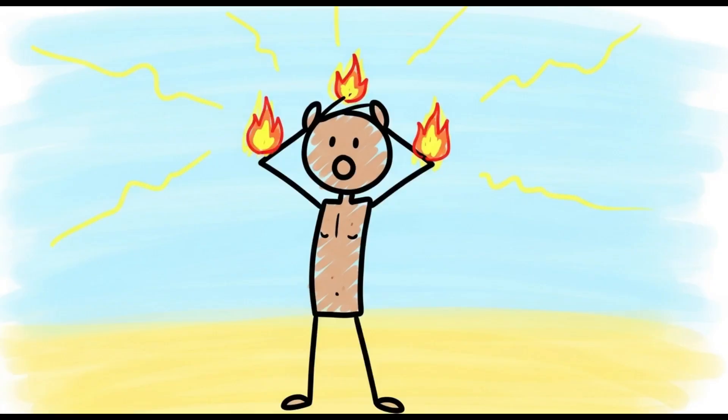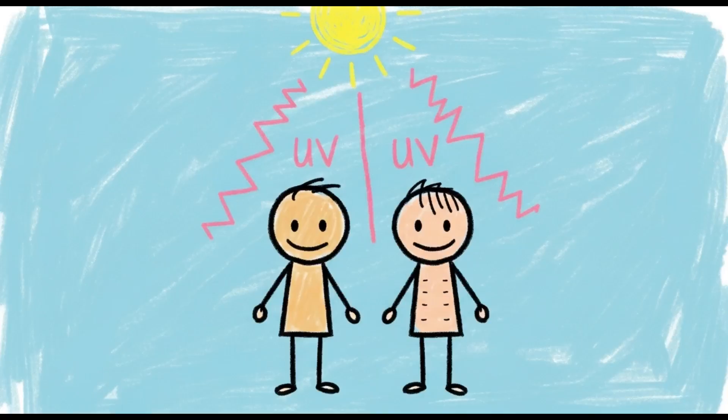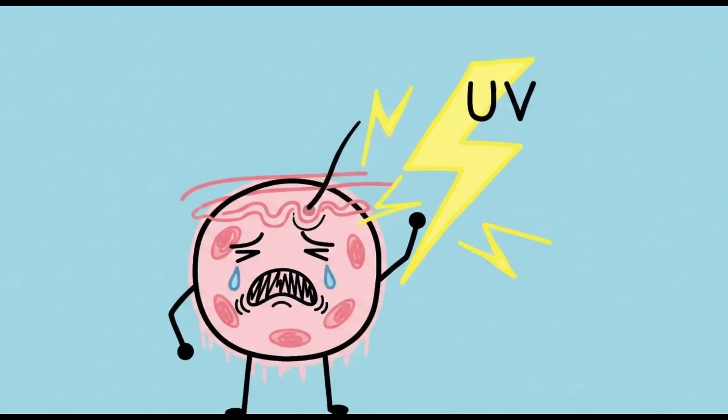Melanin is like SPF 10 to 15. It helps, it doesn't shield. UV radiation doesn't screen for tone. In dark skin, the damage appears later. It's sometimes worse due to late diagnosis.